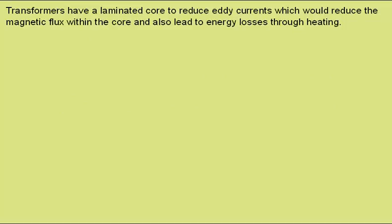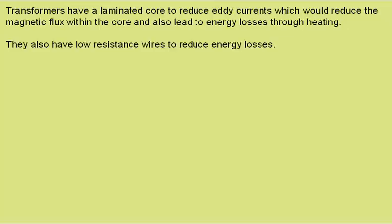Transformers have a laminated core made out of many thin sheets of iron rather than one large block of iron. This reduces eddy currents, which would reduce the magnetic flux within the core and would also lead to energy losses through heating of the core. They also have low resistance wires to reduce energy losses, making transformers sometimes over 97% efficient.